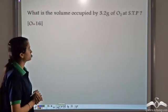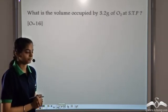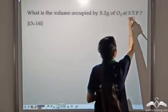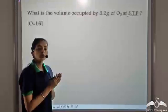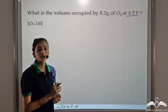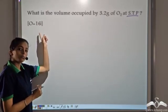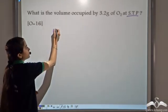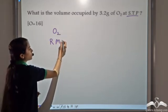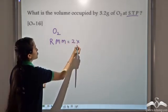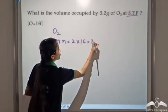Let's try to solve a question. What is the volume occupied by 3.2 grams of oxygen at STP? We are given that standard temperature and pressure conditions are maintained. We know that the volume occupied by 1 mole of a gas at STP is its molar volume. So let's start by taking the relative molecular mass of oxygen gas, O₂. The relative molecular mass of oxygen is 2 × 16, which is 32 atomic mass units.